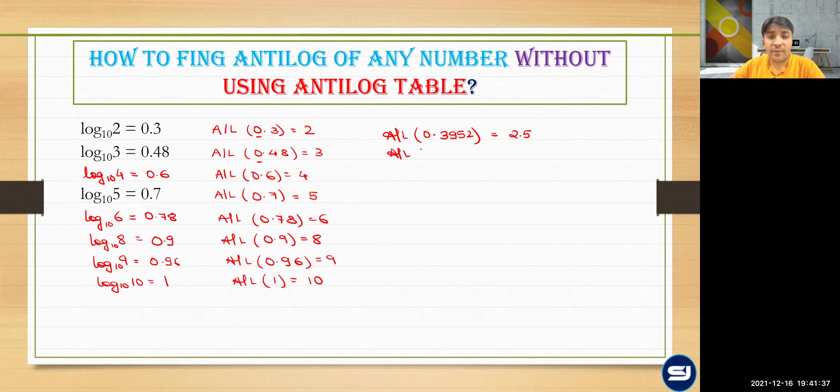But if I am having antilog of 2.48, then 0.48 ka antilog you know is three into 10 raise to decimal ke value, whatever is the value raised to the power of 10. So this will be equal to 300.